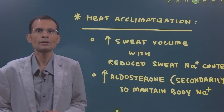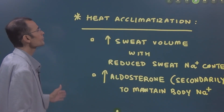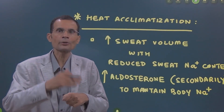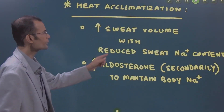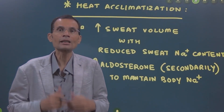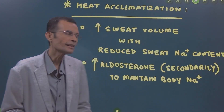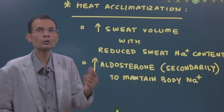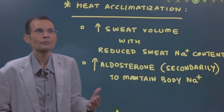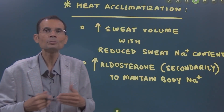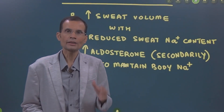When exposed to high environmental temperature, the body undergoes heat acclimatization — it tries to cope with heat stress. What happens is there is increased sweat volume; as sweat evaporates from the skin, there is a cooling effect. This increased sweat volume comes with reduced sweat sodium content, which is a sign of acclimatization. Sodium is being conserved, and there will be increased aldosterone levels — a secondary aldosteronism — because increased sweat volume means fluid is lost from the ECF and plasma, so aldosterone acts to maintain the body's sodium levels.